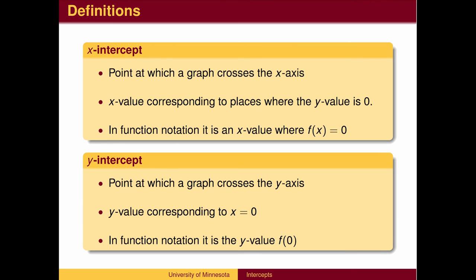A y-intercept is a point at which a graph crosses the y-axis. It is the y-value when x equals zero. In function notation, the y-intercept is the value f(0).